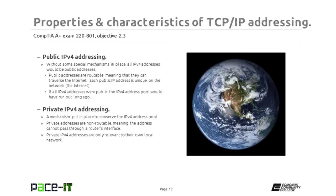Thankfully, they came up with private IPv4 addressing, specifically used as a mechanism to conserve the IPv4 address space. Private IPv4 addresses are non-routable — they cannot pass through a router's interface out onto the public internet. IPv4 private addresses are only relevant to their own local networks, meaning they're only significant within their own network, but even there they need to be unique for IP addressing to work.